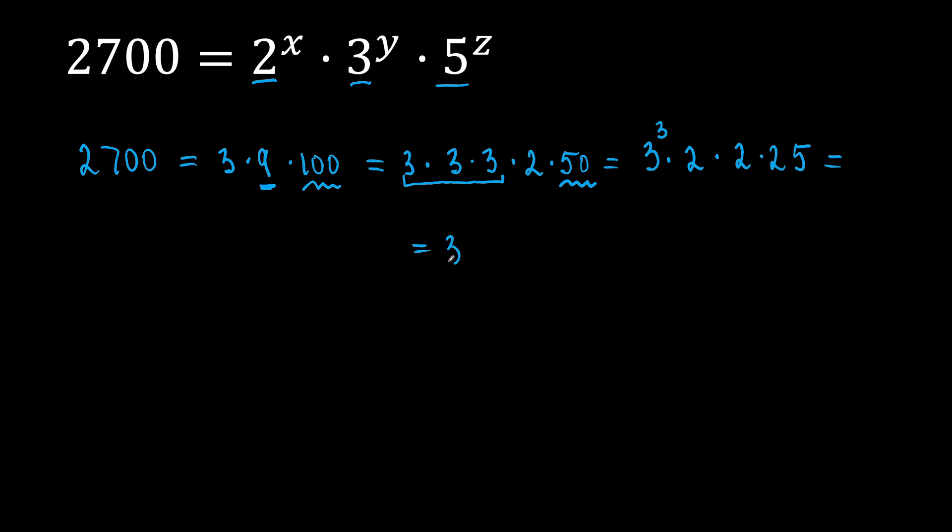We have 3 to the power of 3. 2 times 2 means 2 to the power of 2. And 25 means 5 times 5. Very good! We almost have everything we need. So, 3 to the power of 3 times 2 to the power of 2. And 5 times 5 means 5 to the power of 2.